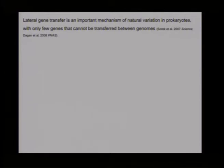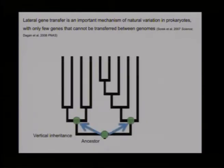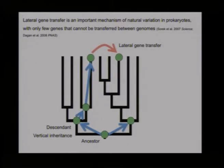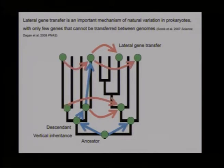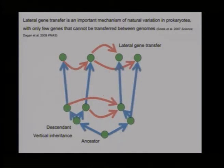Today we know lateral gene transfer is an important mechanism of natural variation in prokaryotes, and very few genes cannot be transferred between genomes. When we use a bifurcating phylogenetic tree to study microbial evolution, we only capture vertical inheritance from ancestors to descendants, yet lateral gene transfer occurs today — we can see it even in the lab — and genomic data suggests it happens at high frequency. One suggestion I've been working on for the last few years is to use a network instead of a tree.